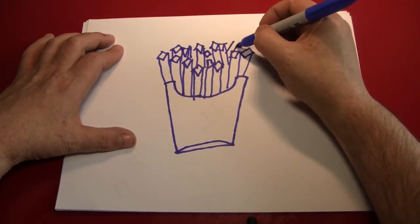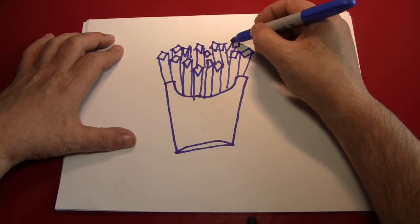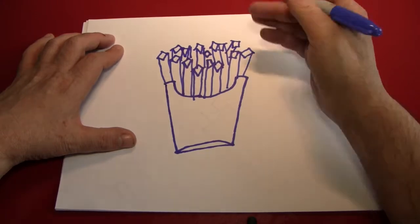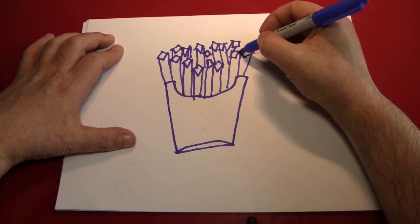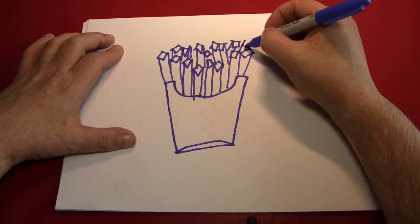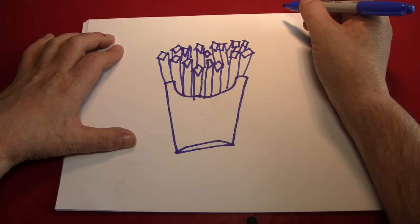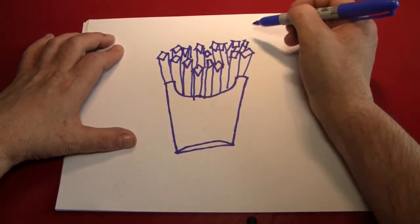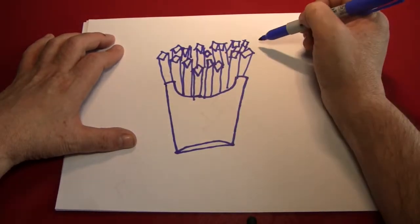Some people used to call these freedom fries. I don't know if anybody still does that. This is basically the pattern you're going to be doing to make fries inside the box. It's just straight lines topped with these little squares.